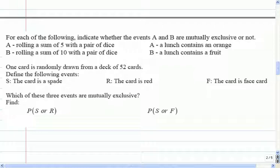You roll a pair of dice, the sum is a 5. You roll a pair of dice, the sum is a 10. Can those happen at the same time on the same roll? No, they can't. So we would call these mutually exclusive. They cannot happen at the same time. You're only going to get one sum when you roll the dice.